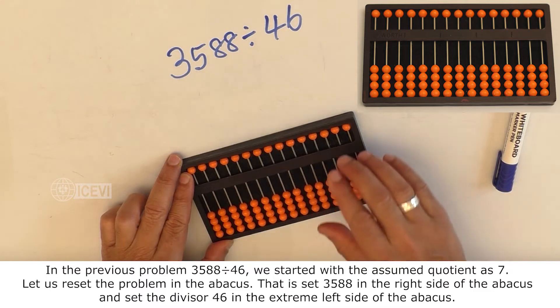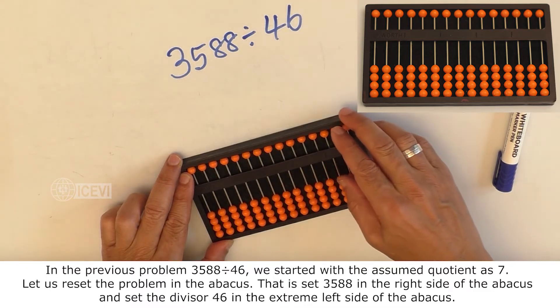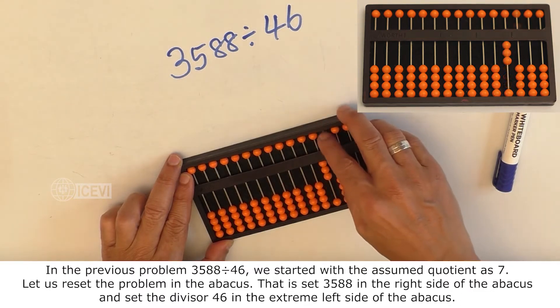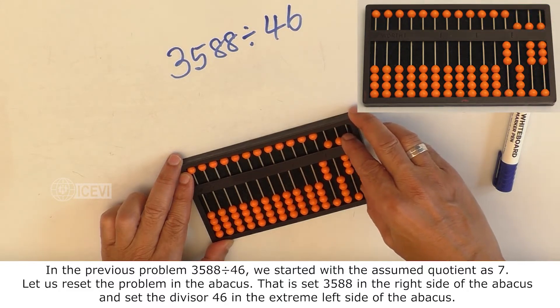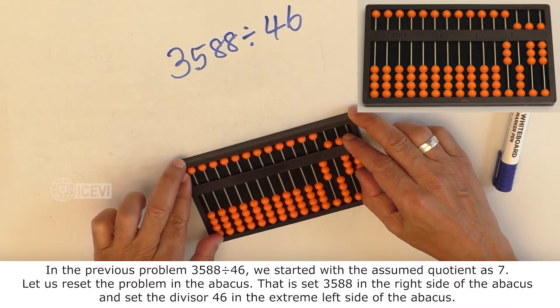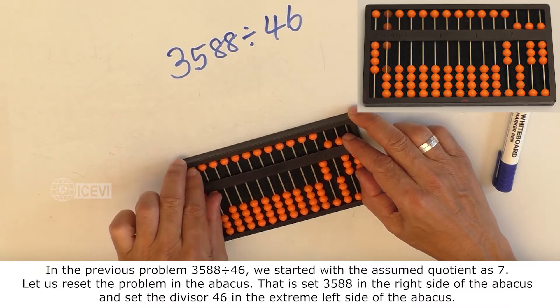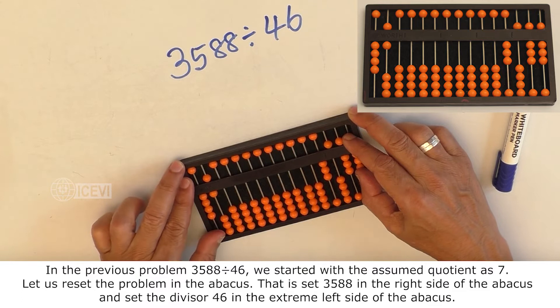Let us reset the problem in the Abacus. That is 3588 in the extreme right side of the Abacus and set the divisor 46 in the extreme left side of the Abacus.